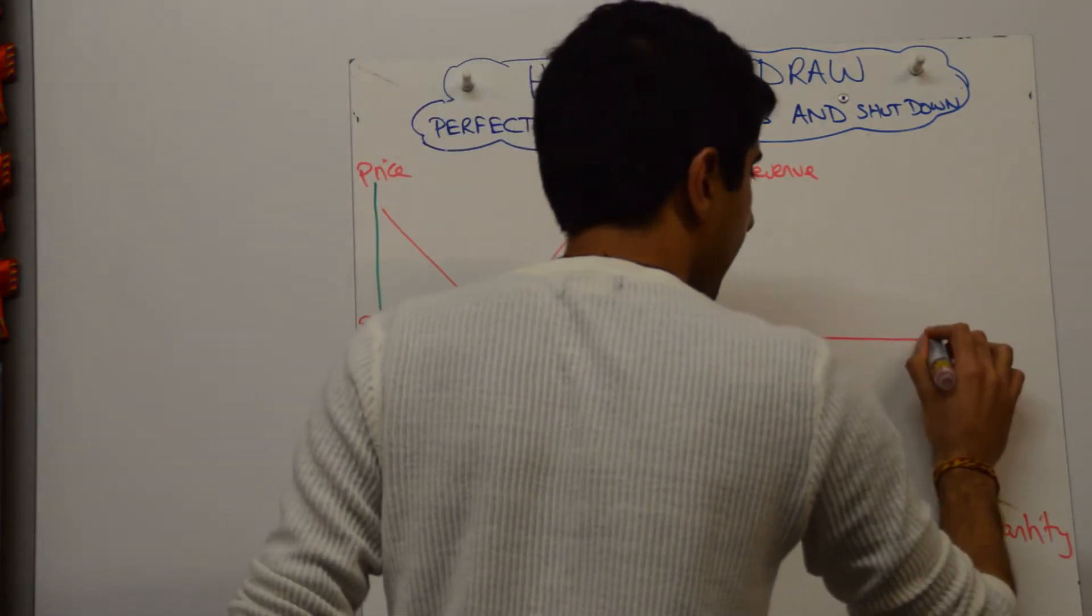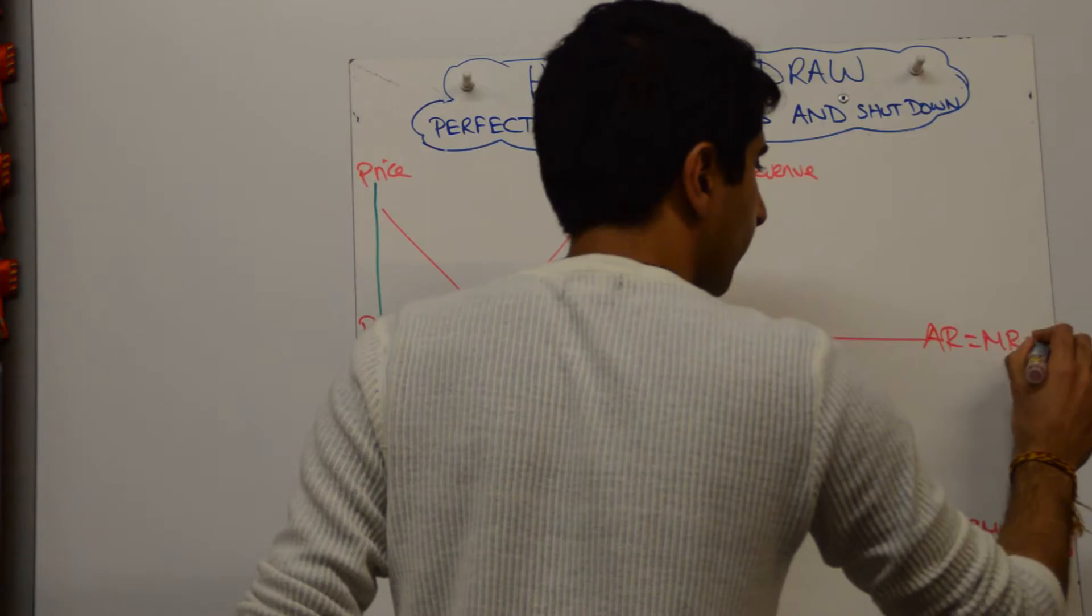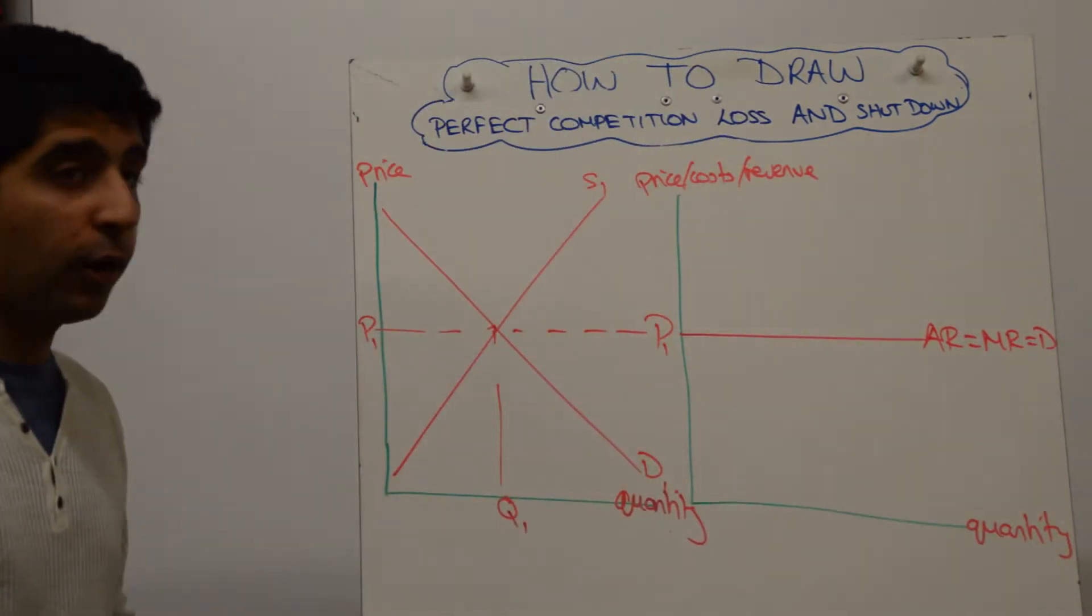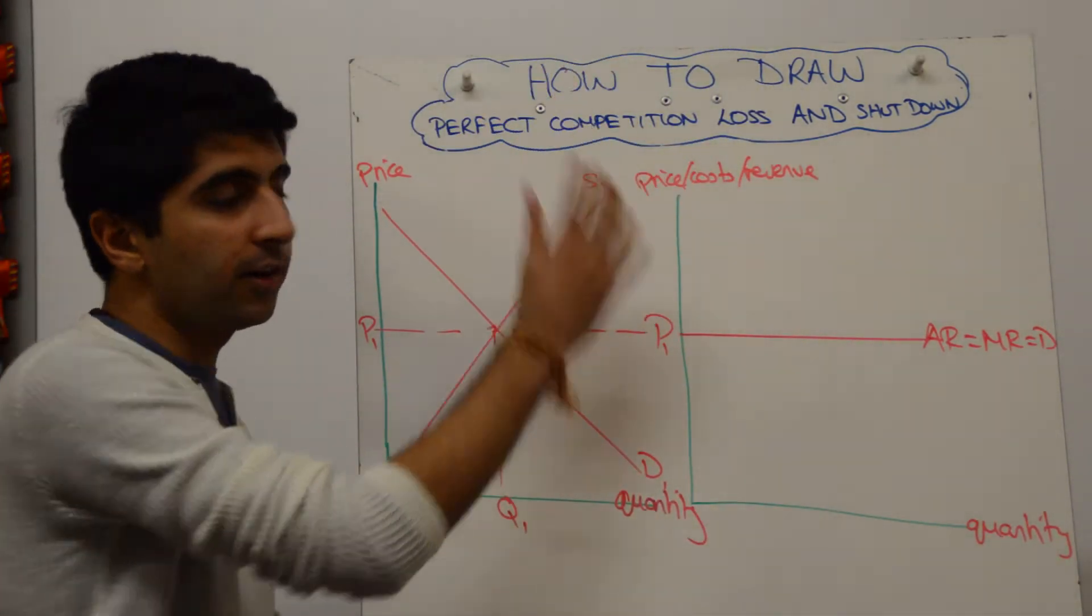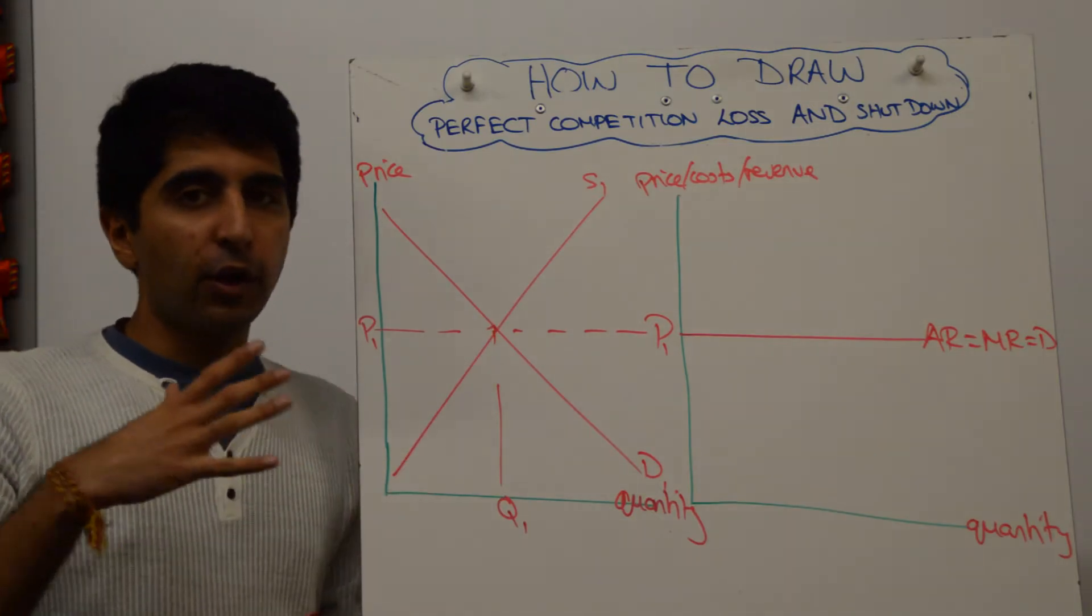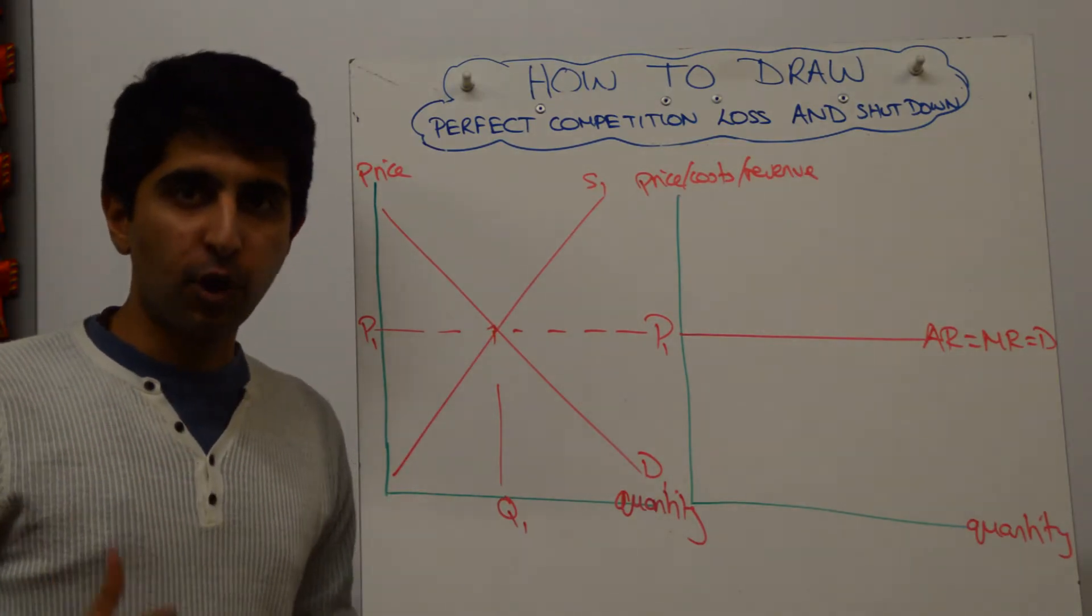That is going to be the AR curve, which is MR, which is demand. Firms are making a loss and they are going to shut down, so they are not going to be covering average variable cost in the short run.